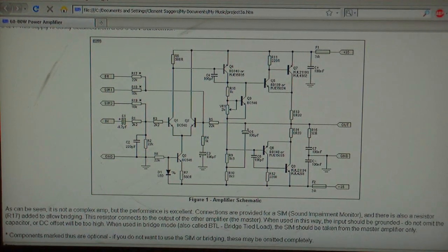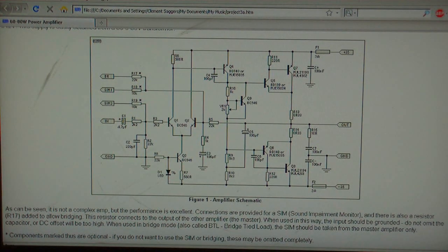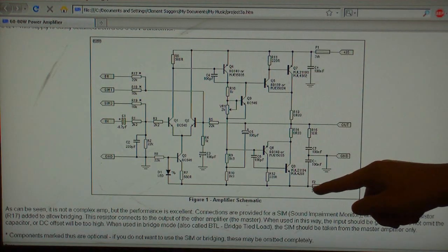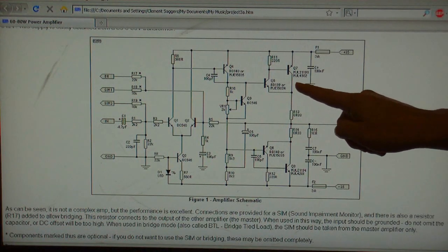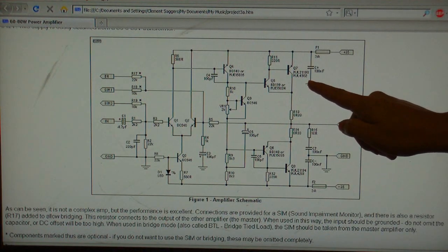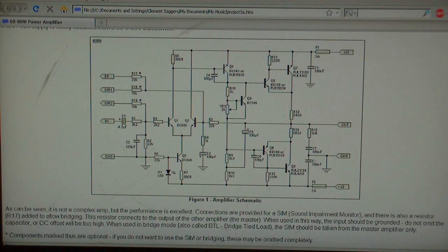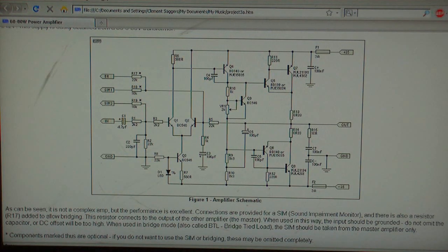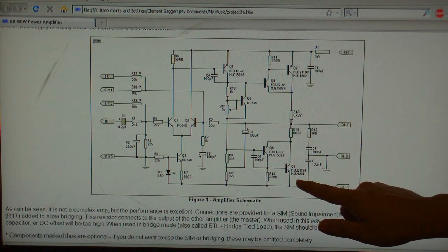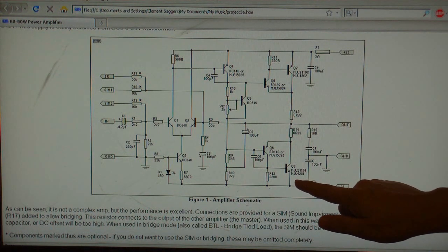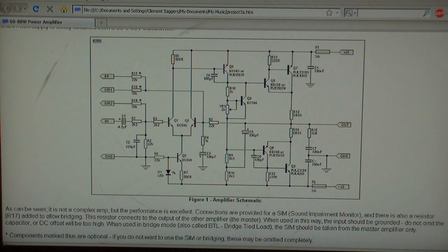The only problem I have with this schematic is I have not been able to get hold of these output transistors. It says here, for the PNP output transistor, I need an MJL-21193, or MJL-4302. And for the NPN output transistor, I need an MJL-21194, or MJL-4281, and I haven't been able to find those anywhere, so I've decided to go for the next best thing.